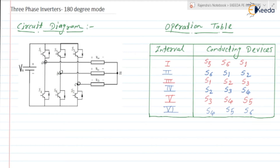In a star connection, the line and phase voltages are different, whereas in delta they are the same. So it is better to draw both line and phase voltage waveforms to analyze the RMS values, harmonic contents, and Fourier series analysis. This is about the circuit diagram and operation table for the 180 degree conduction mode.